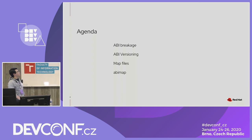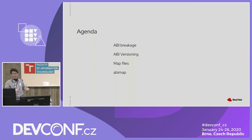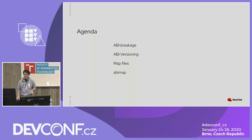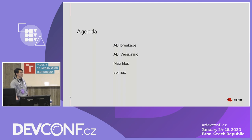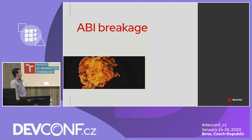This is my agenda. I will talk about ABI breakage, ABI versioning, map files, and finally about the ABI map tool to automate the update of map files.